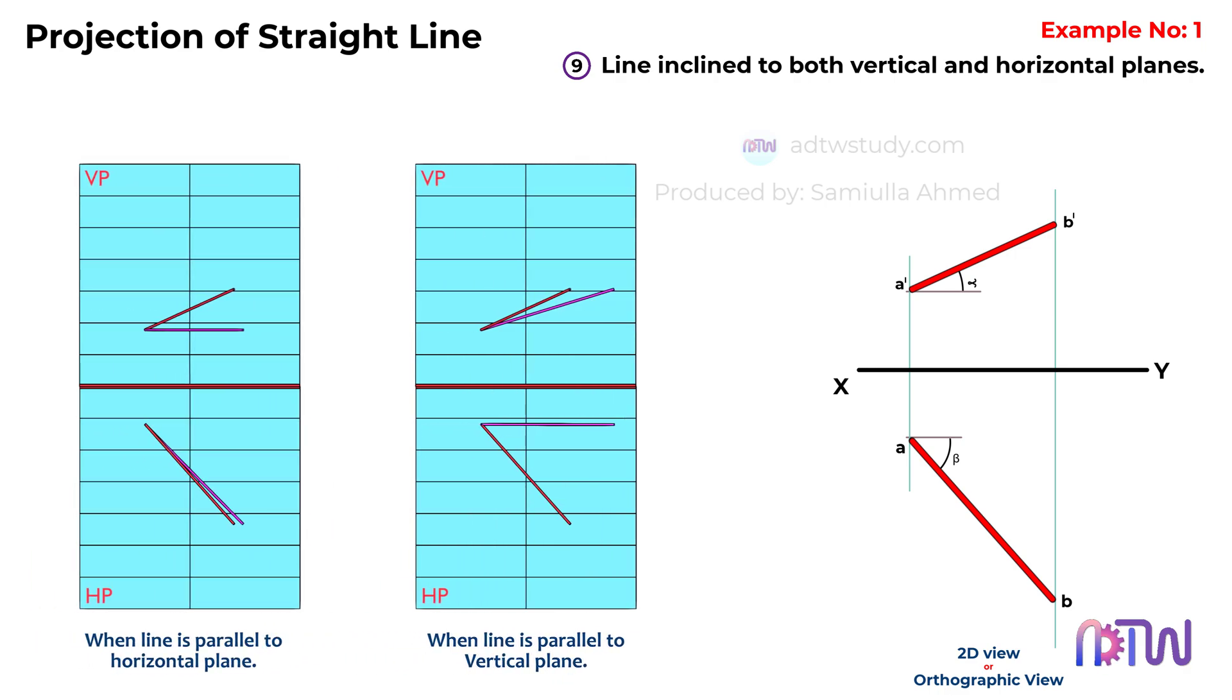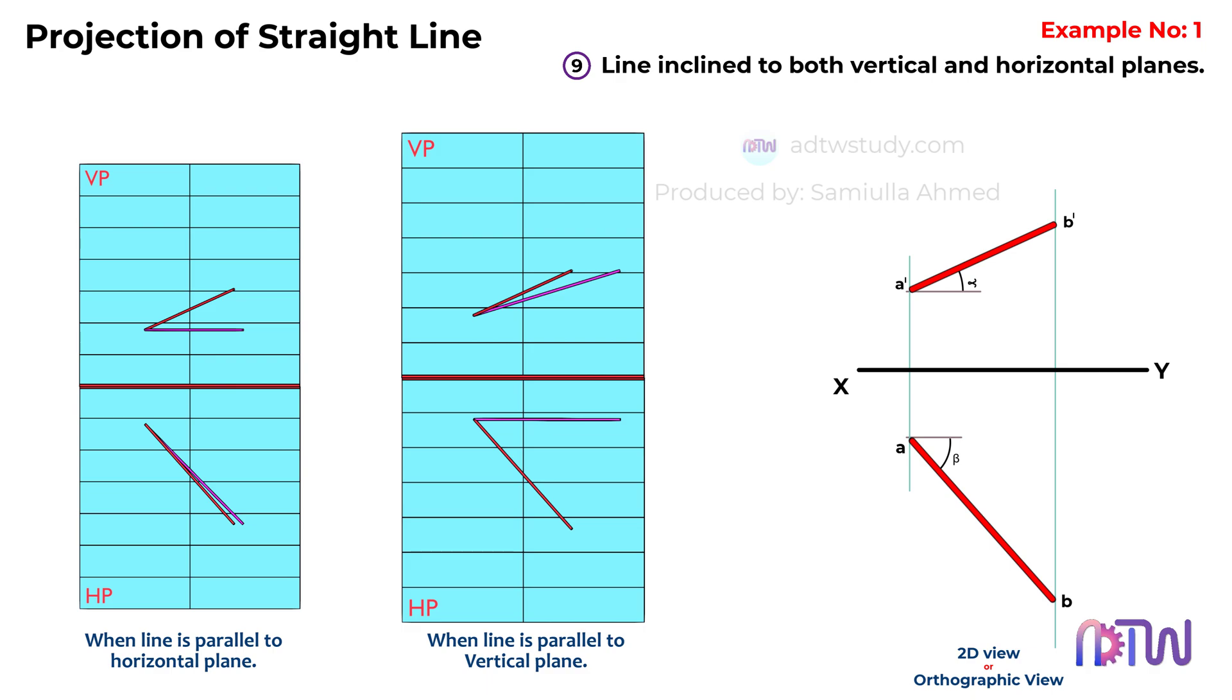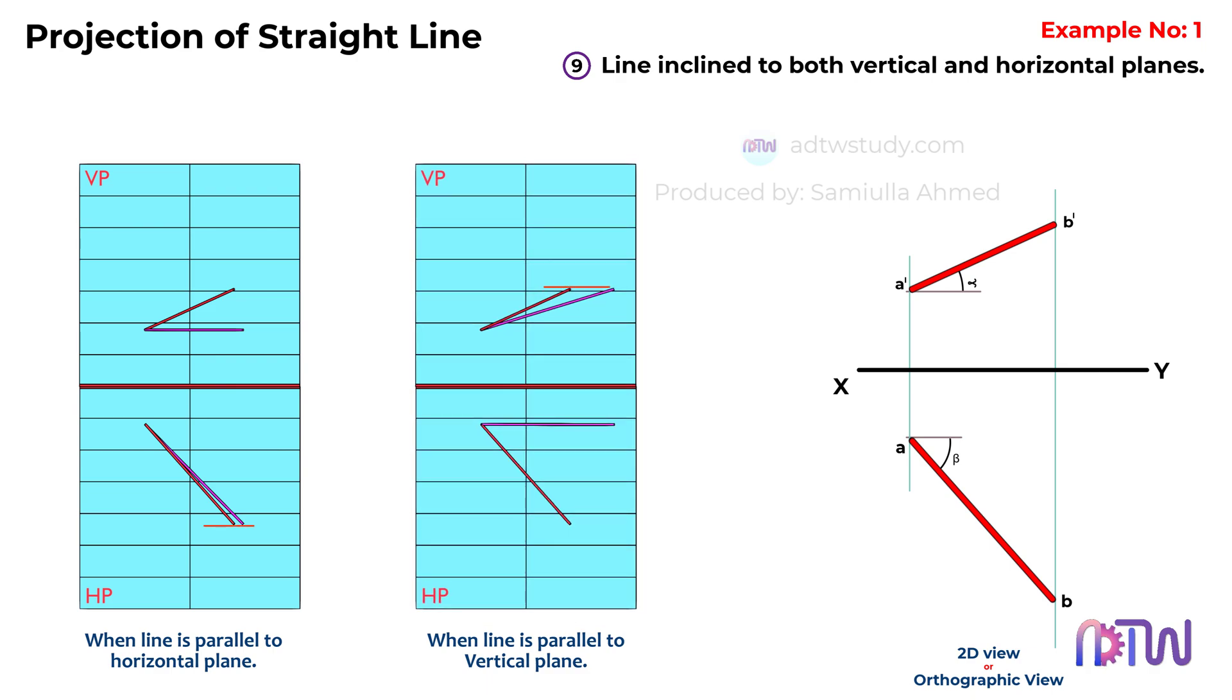Keep these images in mind as a reference. When the line is parallel to the horizontal plane, we get its 2D representation like this, and similarly when it's parallel to the vertical plane. Notice how the endpoints of both the actual line and the tilted line align. So, how do we find the true length in a 2D view? Let's explore.